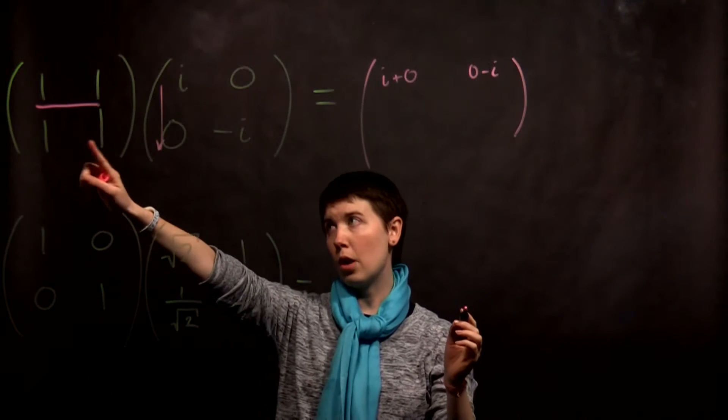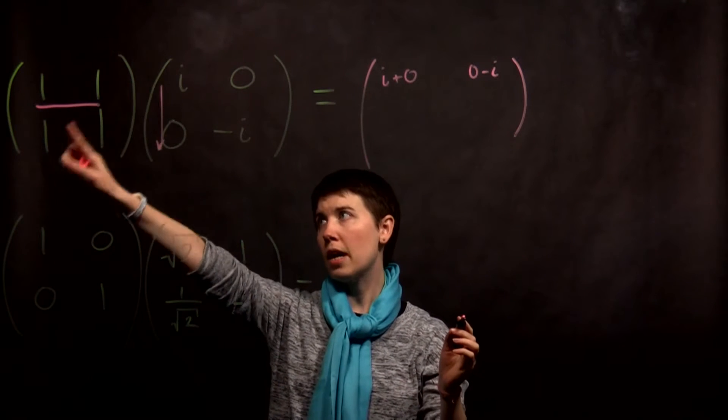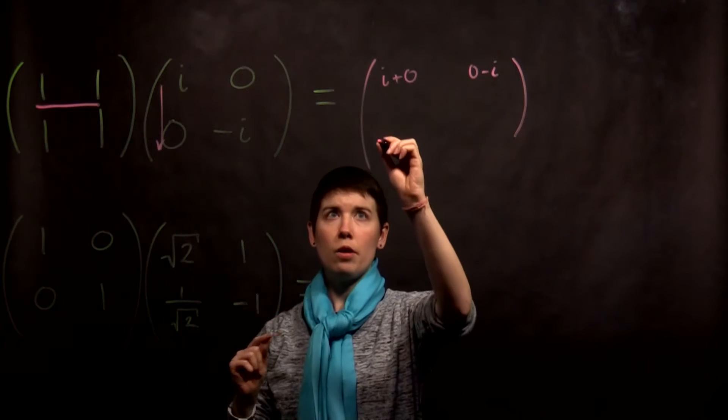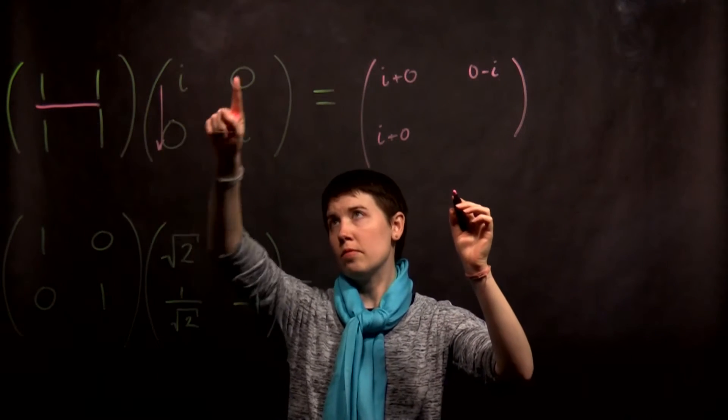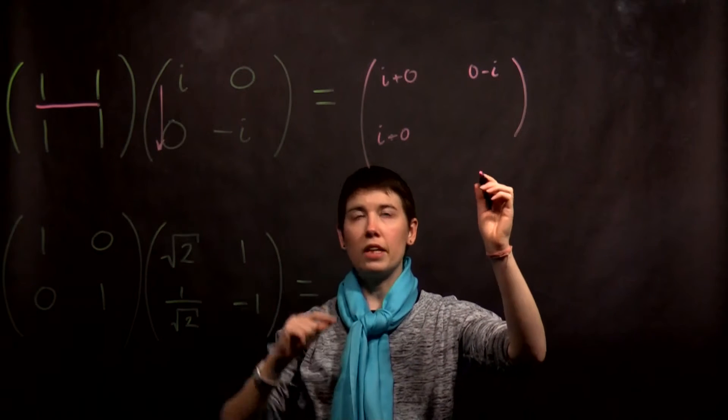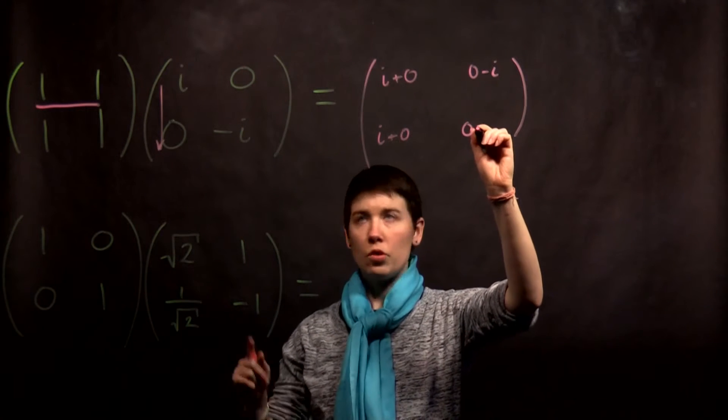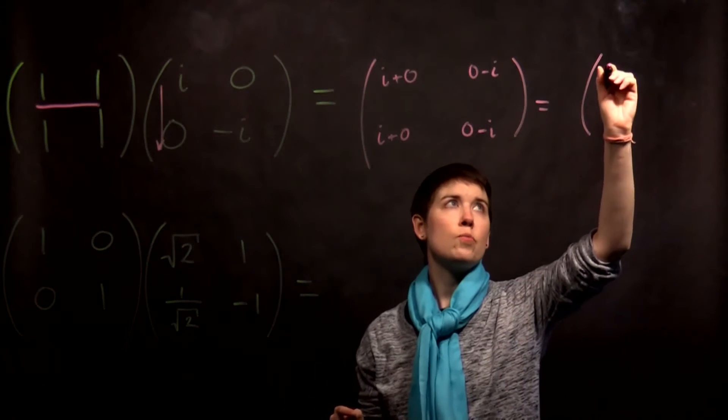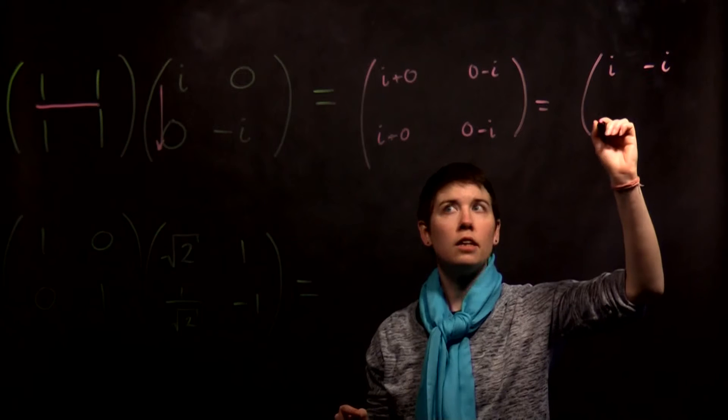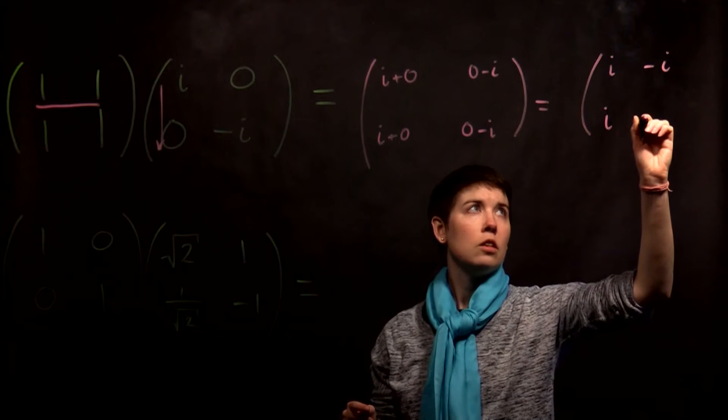We then go to the second row. 1 times i, 1 times 0. So again i plus 0. And then the second column, 1 times 0, 1 times negative i. So again 0, negative i. So when we simplify this down, this becomes i, negative i, i, negative i.